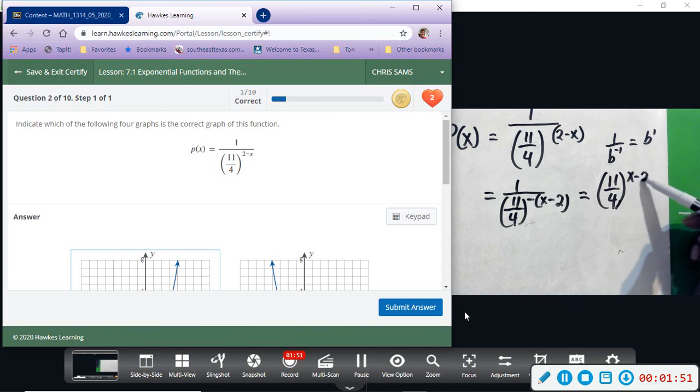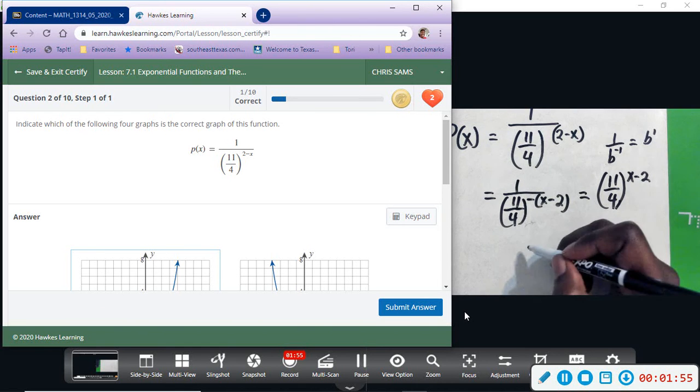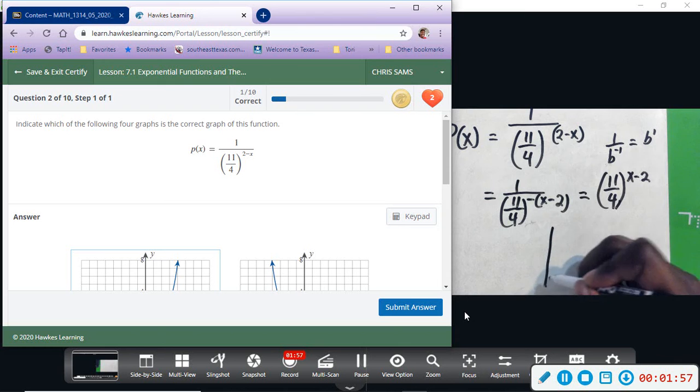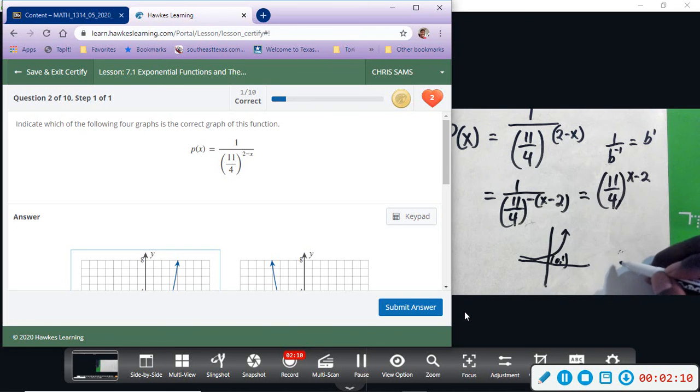Because of this minus two, this graph is going to get moved two places to the right. So here's the standard graph going through—this would be zero comma one. Because of the minus two, remember x does opposite, this graph would move two spaces to the right.